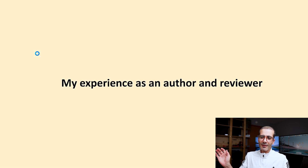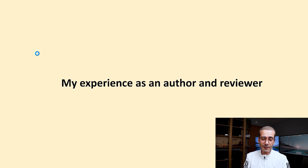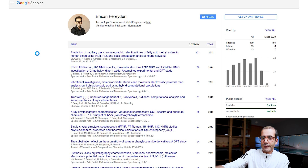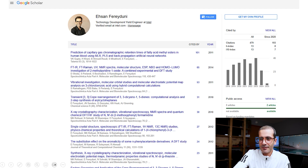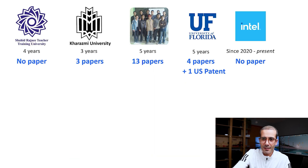So now, why should you listen to me about research paper writing? I have been the author of research papers and also a reviewer for many journals. This is my Google Scholar portfolio — I have published 20 papers and my H-index is 13. This might go up; I'm recording this in 2025. I have a good H-index, which I will explain later. During my bachelor's degree I had no paper, then during my master's I published three.